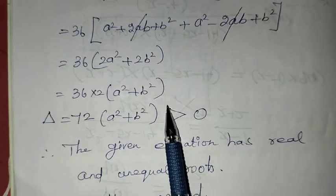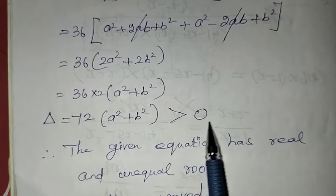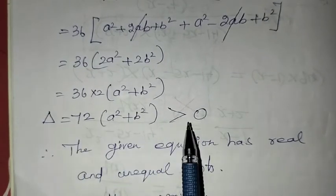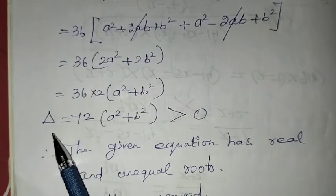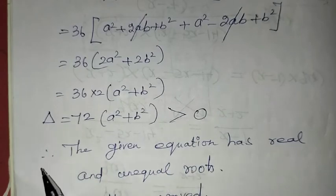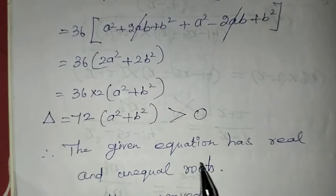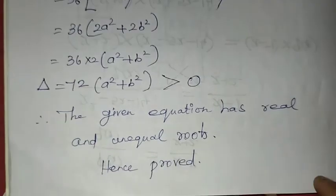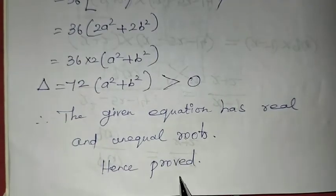This is greater than 0. Therefore delta is greater than 0, so the given equation has real and unequal roots. Hence proved.